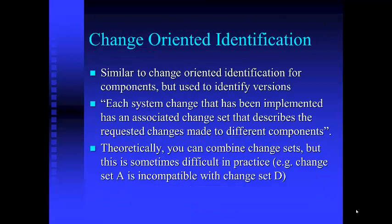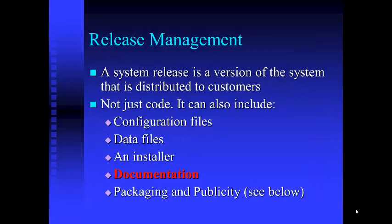Change-oriented identification is similar to change-oriented identification for components but used to identify versions. Each system change that has been implemented has an associated change set describing the requested changes made to components. Theoretically you can combine change sets, but it's sometimes difficult in practice — for example, change set A may be incompatible with change set D. A system release is a version distributed to customers — not just code. It can also include configuration files, data files, installer documentation, and of course packaging and publicity — be careful about the packaging and publicity.